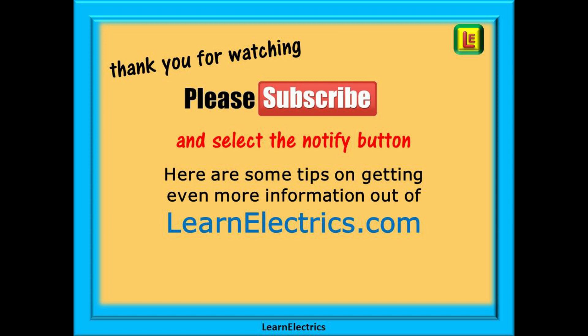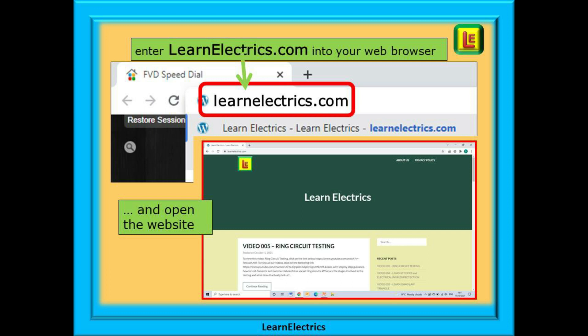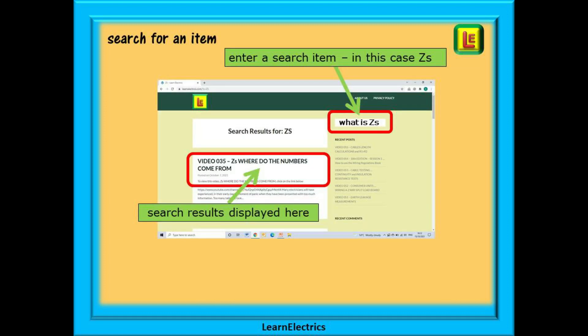Here are some tips on getting even more information and help out of LearnElectrics.com. At your web browser enter LearnElectrics.com into the search bar. Select LearnElectrics.com from the choices offered and the website as shown will open up for you. You now have a couple of choices. You can search for a help item or any video by entering a keyword into the search bar on the right. Click on return and all the help files and videos with that word in the title will be listed for you. They will be shown with a short description. Click on continue reading for more information. Each video listed will have a link shown that will take you directly to that exact YouTube video.